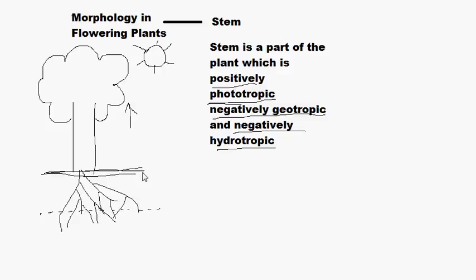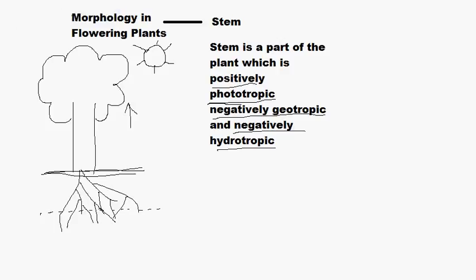Let us compare and contrast with the root. Root is a structure that grows towards the water, so it is positively hydrotropic. It grows towards the soil or earth, so it is positively geotropic. And it grows away from light, so it is negatively phototropic. So we already get three points of differentiation between stem and root from phototropism, geotropism, and hydrotropism.